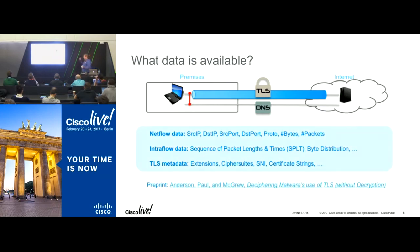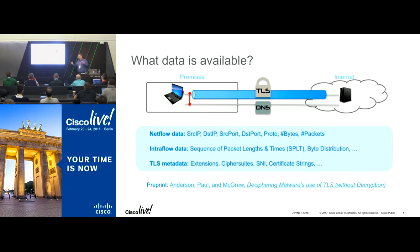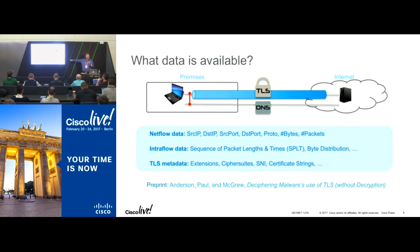Specifically with Joy, we're going to look at particular data items — that's what's currently in the Joy package. Being able to look at the sequence of packet lengths, the byte distribution, and the cipher suites being offered in a TLS exchange will help you understand what's going on in an encrypted flow before it becomes encrypted. There's actually a paper written by a couple of my colleagues called 'Deciphering Malware's Use of TLS Without Decryption.' It's a PDF available free on the internet — google that title and you'll find it. It's a very good read.